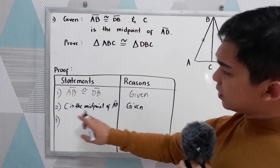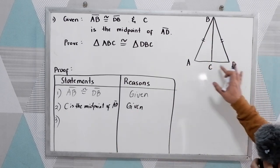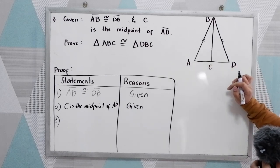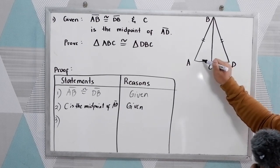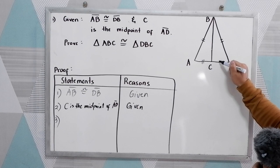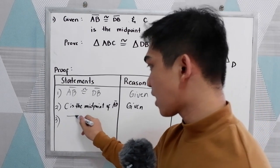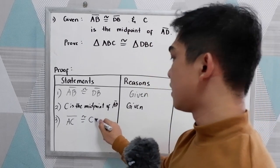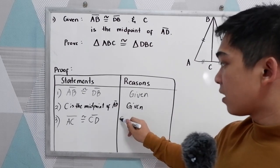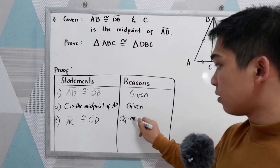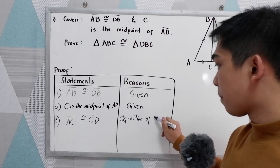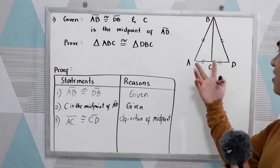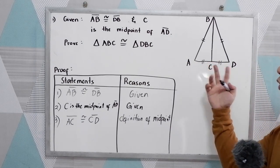In our given, C is the midpoint of AD. We know that midpoint bisects the parts of the triangle into two equal parts. So we can say that AC is congruent to CD. That is by definition of midpoint. Midpoint bisects the segment into two equal or congruent parts.